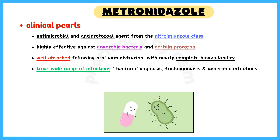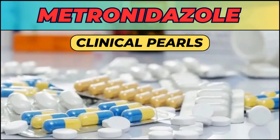Metronidazole is an antimicrobial and antiprotozoal agent from the nitroimidazole class. It is highly effective against anaerobic bacteria and certain protozoa. Metronidazole is well absorbed following oral administration with nearly complete bioavailability of around 100%. It is commonly used to treat a wide range of infections, including bacterial vaginosis, trichomoniasis, giardiasis, and anaerobic infections. In this video, we will discuss some important clinical pearls about metronidazole.